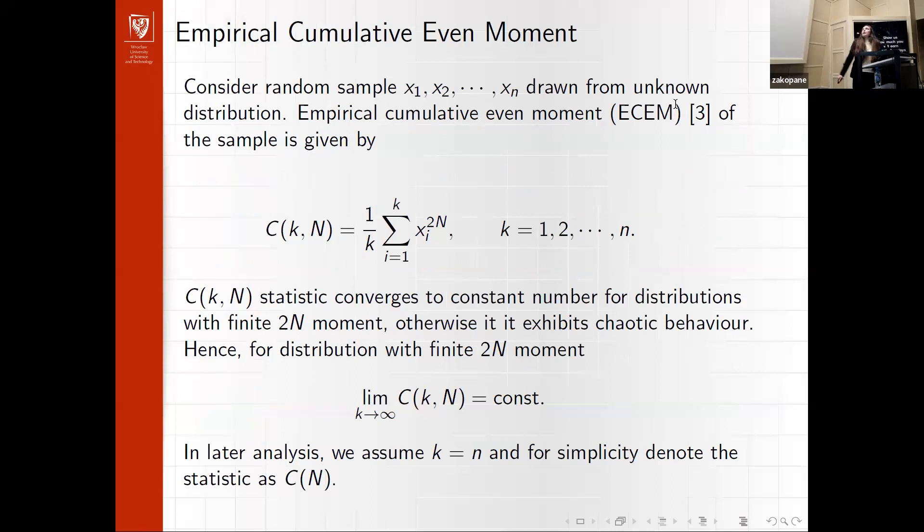At first I will introduce the statistics. When we have independent random observations, this statistic is simply defined as the cumulative sum of even moments, of samples taken to the even power k, and when this even moment exists, the statistic converges to a constant number.